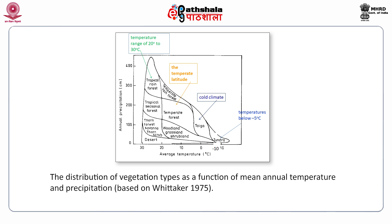This diagram shows the distribution of vegetation types as a function of annual temperature on the x-axis and precipitation on the y-axis. In the temperature range of 20 to 30 degrees, we can distinguish the tropical rain forest biome, tropical seasonal forest biome, thorn forest, savannah and thorn scrub. In the temperate latitudes, we have the temperate rainforest, woodland, grassland and shrublands. In the cold climate, it is the Taiga biome which is predominant. At temperature minus 5 degrees, it is the tundra type of biome that occurs.